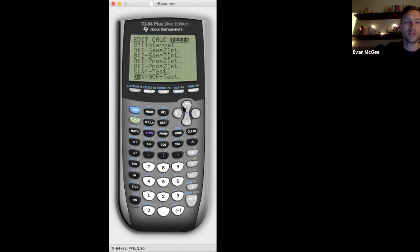For goodness of fit. The observed we had in matrix A. Hit calculate. So there's the chi-square test statistic 68.57 and the p-value is 0.00008. So it's very small, essentially zero.